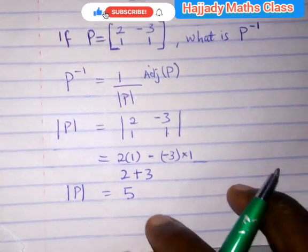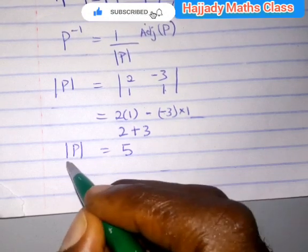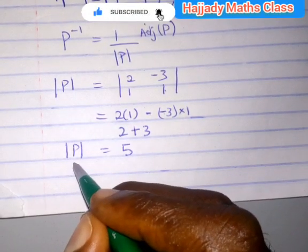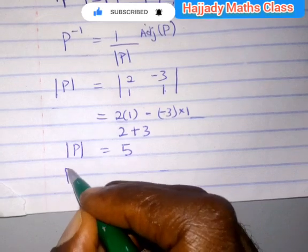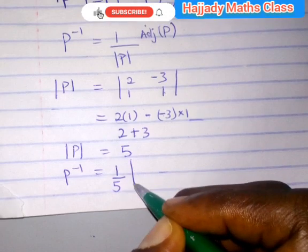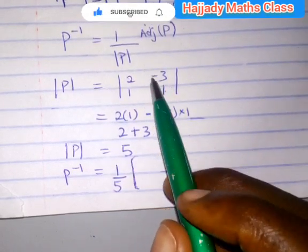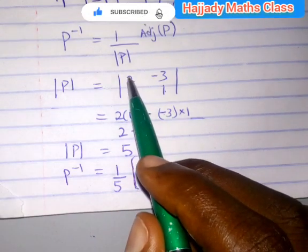We have the value for our P inverse will be 1 over 5. In calculating the adjoint of this, we are just going to replace the value of this while you change the sign of this.